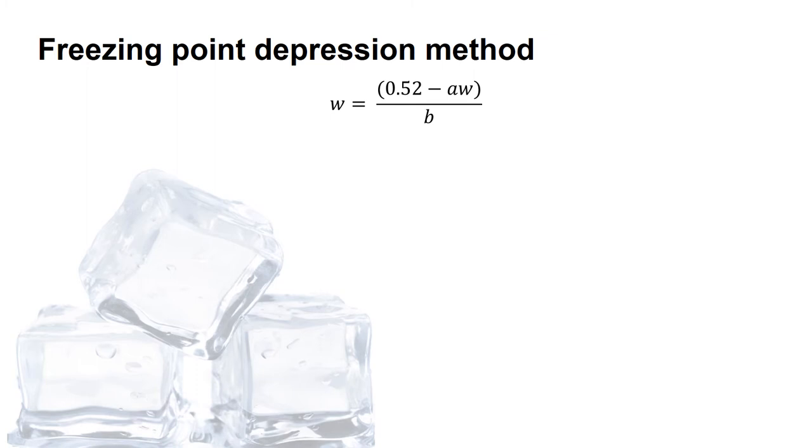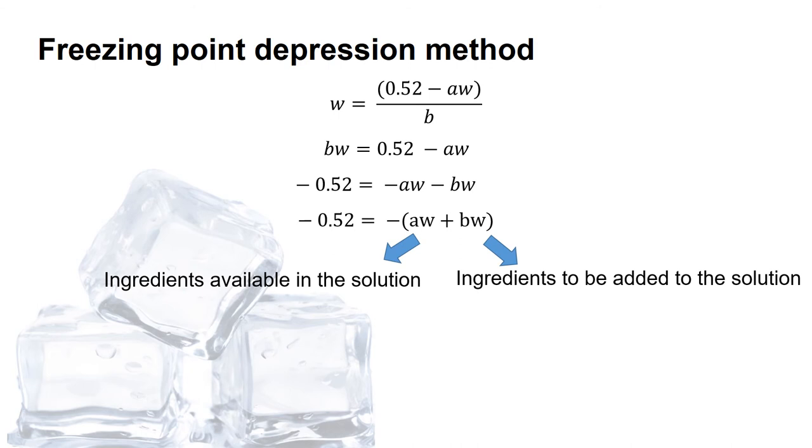So in this case, it actually has a hidden w just like the b. After rearranging, you will see a clearer picture. In this case, both sides will achieve negative 0.52. So meaning that aw plus bw equal to 0.52. Then the solution or the formulation is isotonic. So a is whatever that is available in the solution or within the formulation, while b is those added up to make the solution isotonic.